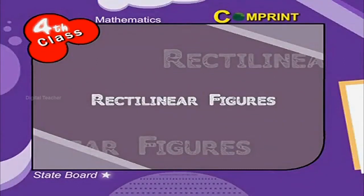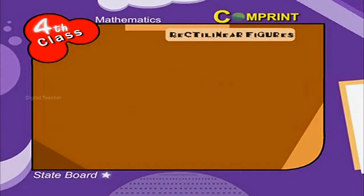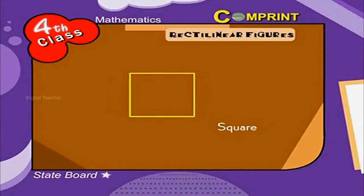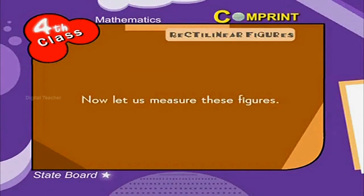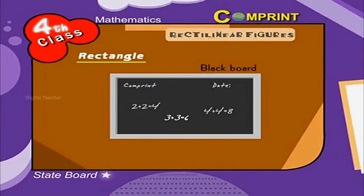Rectilinear Figures. A figure bounded by segments and rectifiable is called a Rectilinear Figure. Examples include a circle, a rectangle, and a square. Now let us measure these figures. The best example for a rectangle is the blackboard of our class.